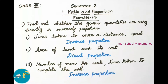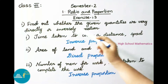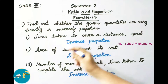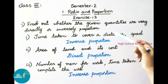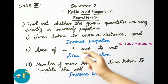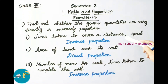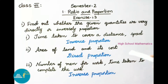Let us see the first question: find out whether the given quantities are in direct or inverse proportion. First one: time taken to cover a distance and speed. If time taken to cover the distance increases then speed will be decreasing. So the given quantities are in inverse proportion.